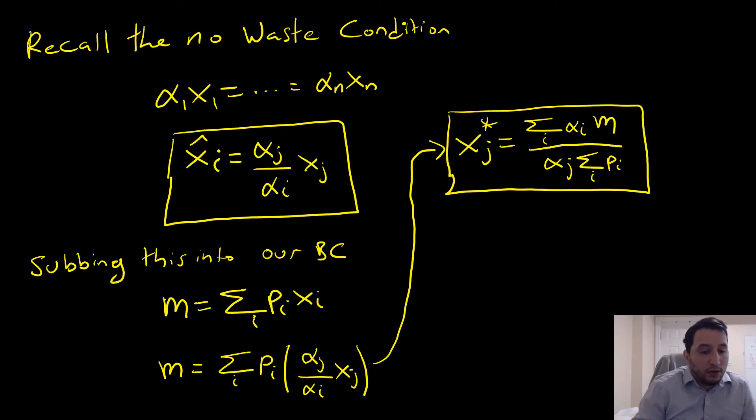The way we go about doing this is recalling our no waste condition as follows. And really, what we're going to do from there is think of this in terms of good i and good j.